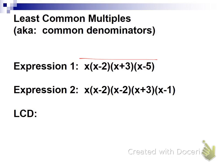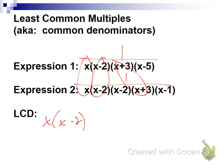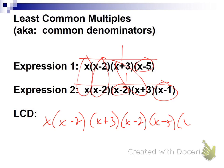For example, if we have two fractions with those factored denominators, the LCD comes from factors they have in common — an x, an (x − 2), and an (x + 3) — plus factors they don't have in common: an (x − 2) from one, an (x − 5) from one, and an (x − 1) from the other. That becomes your least common denominator.